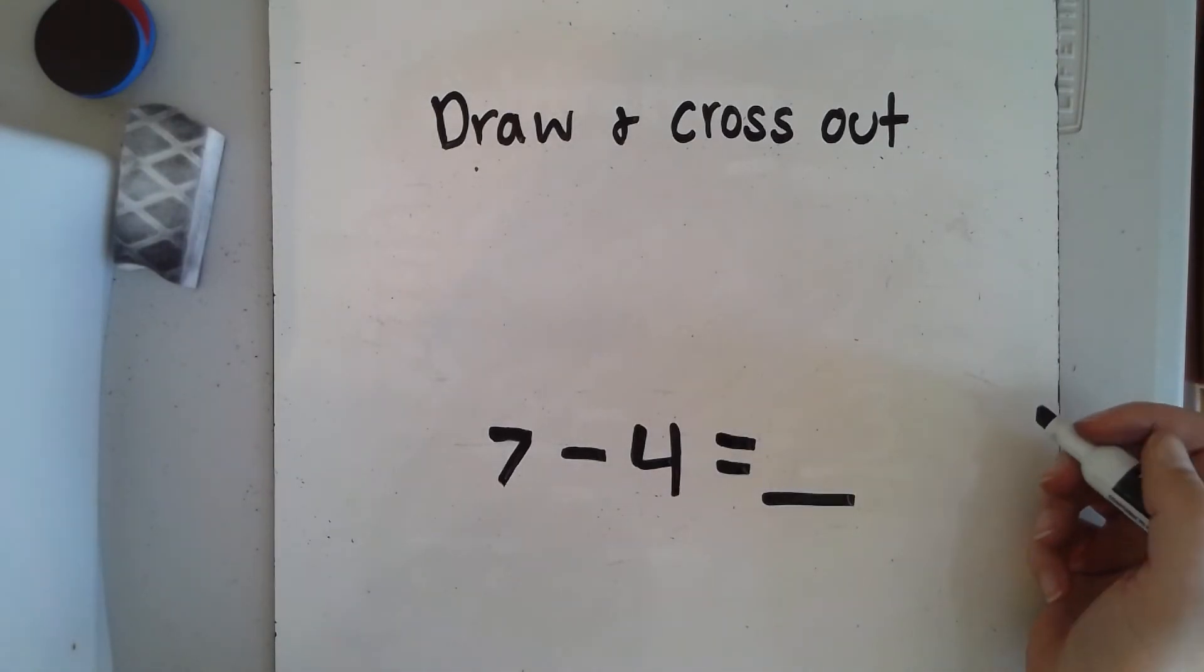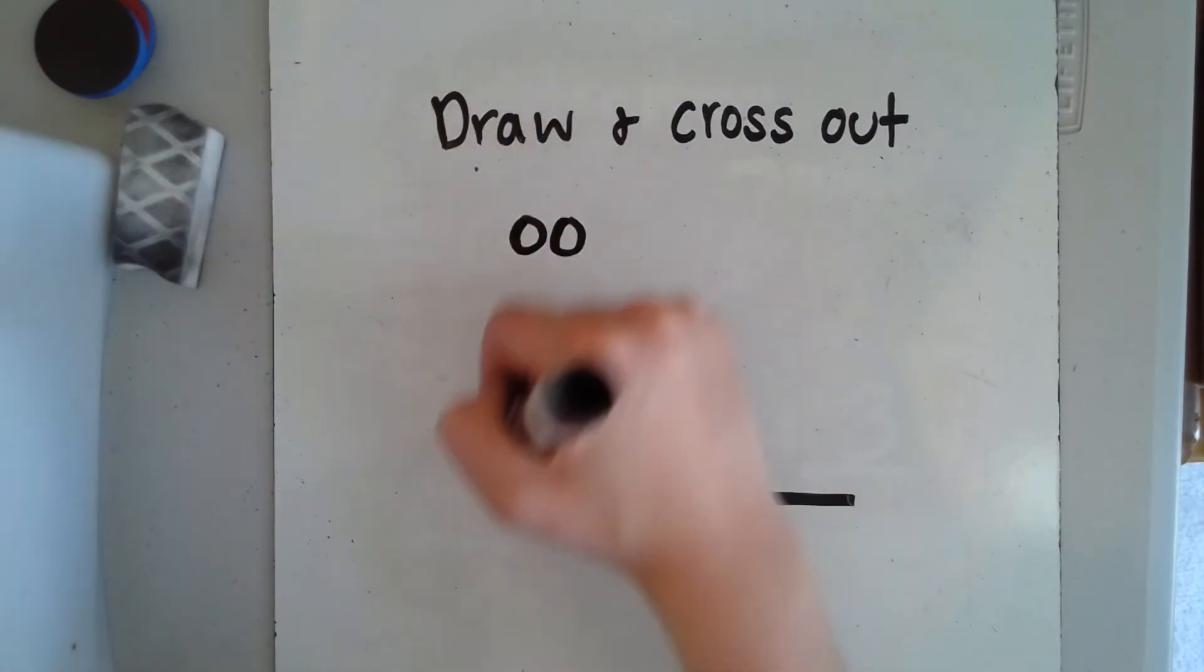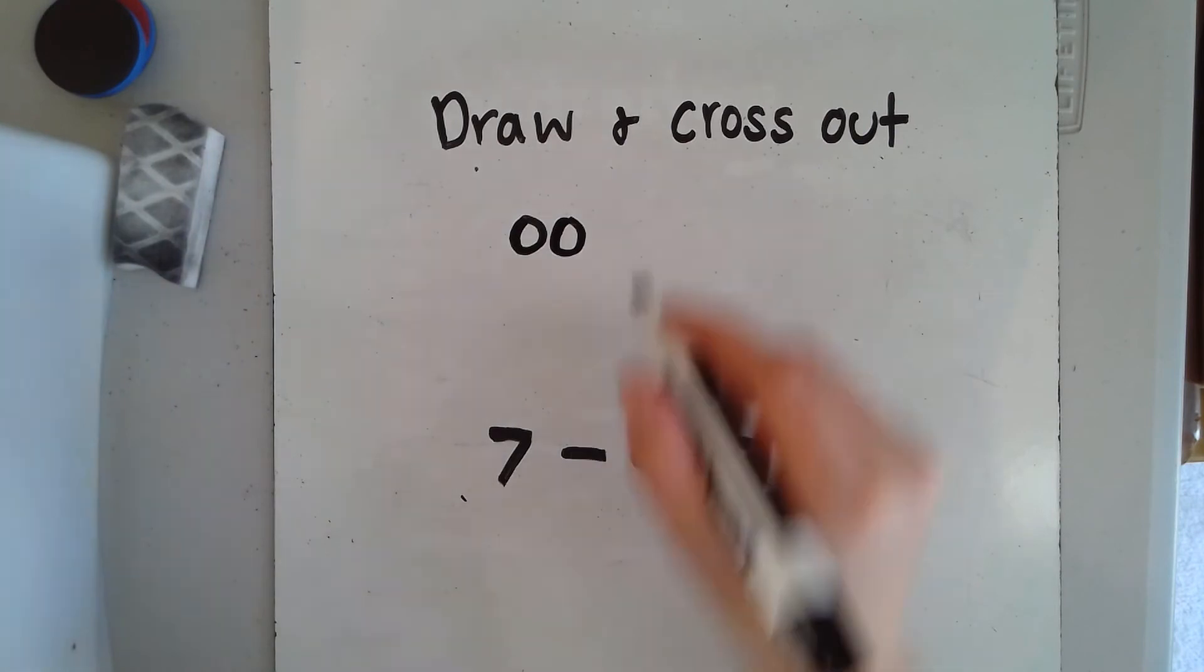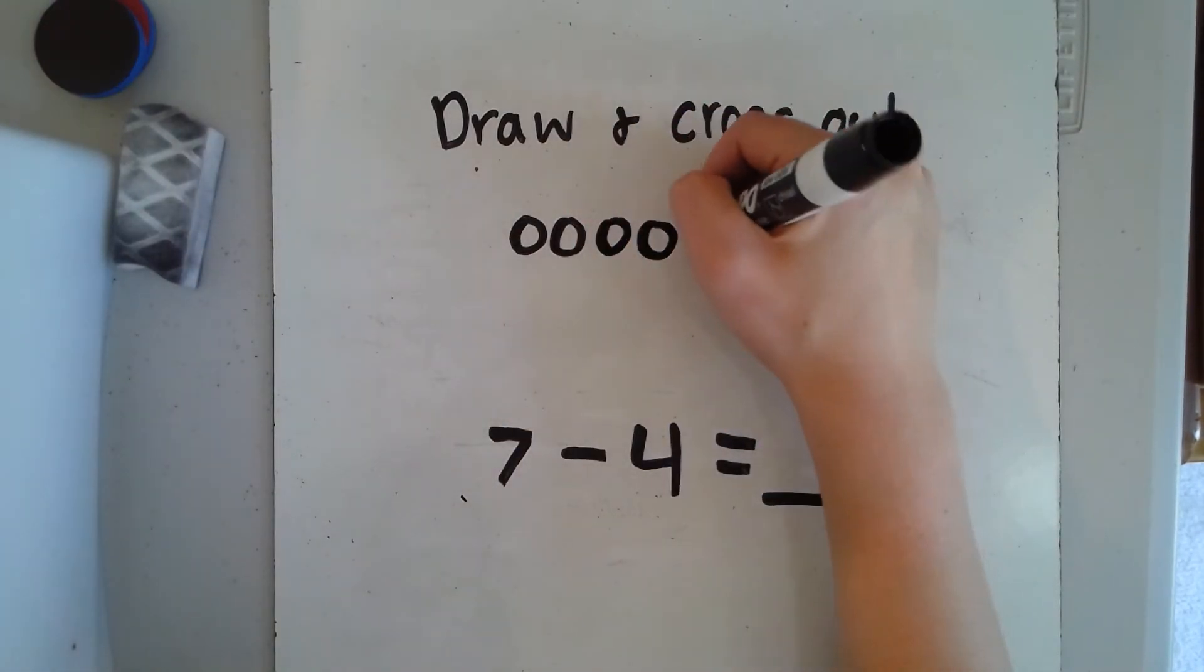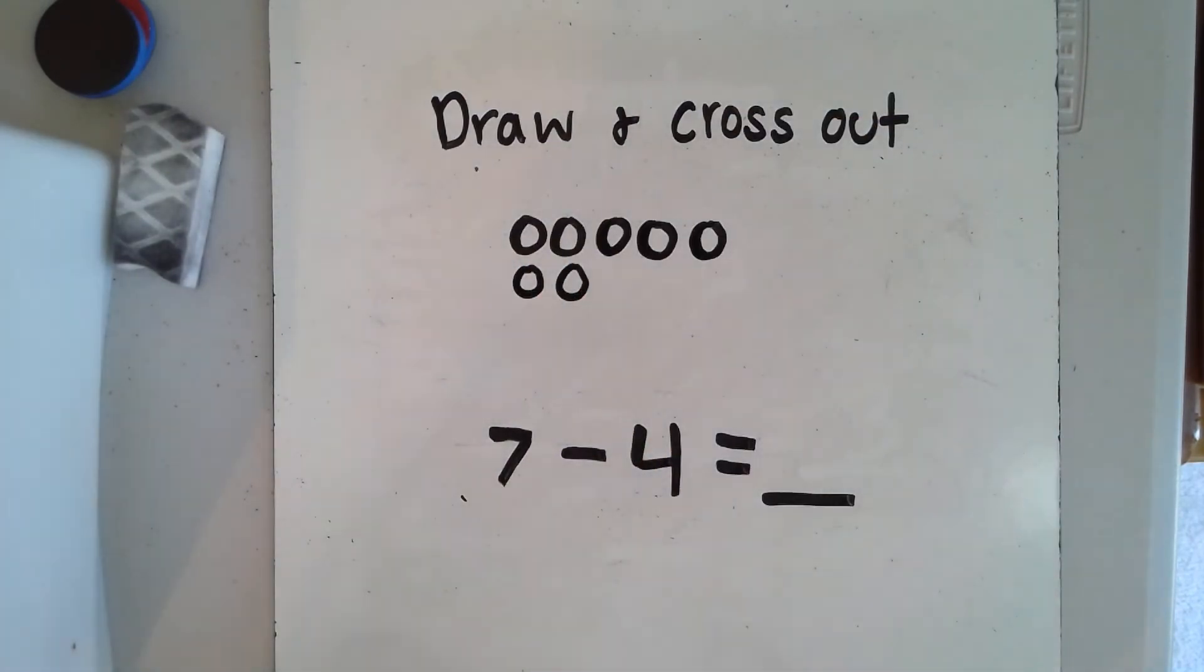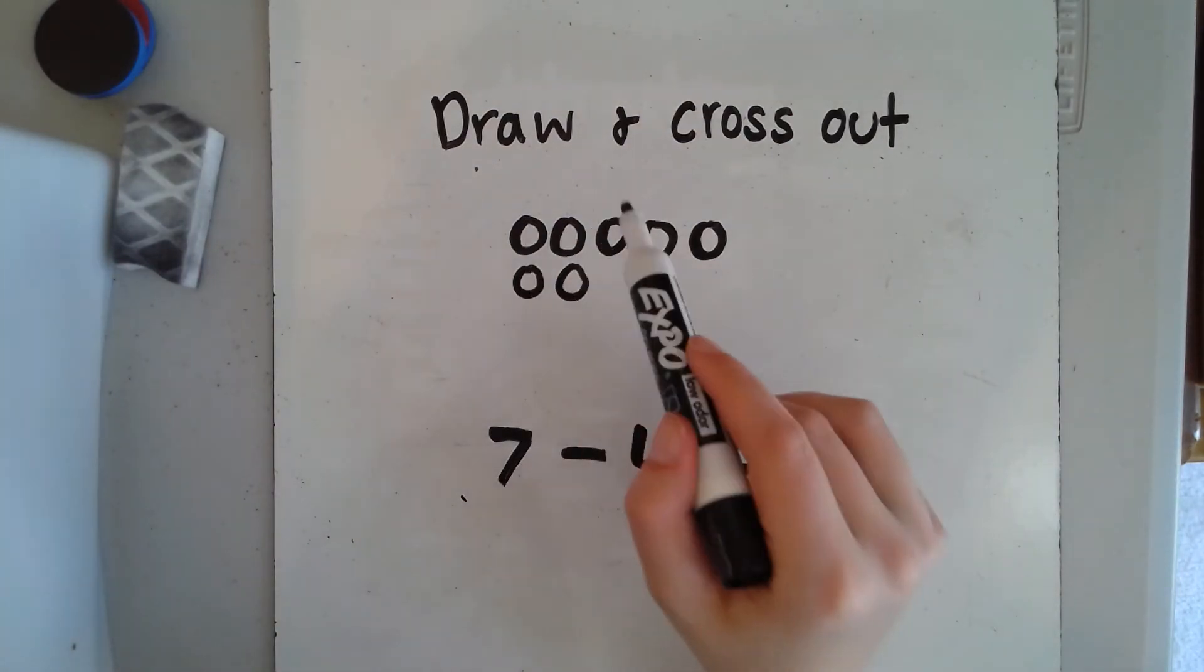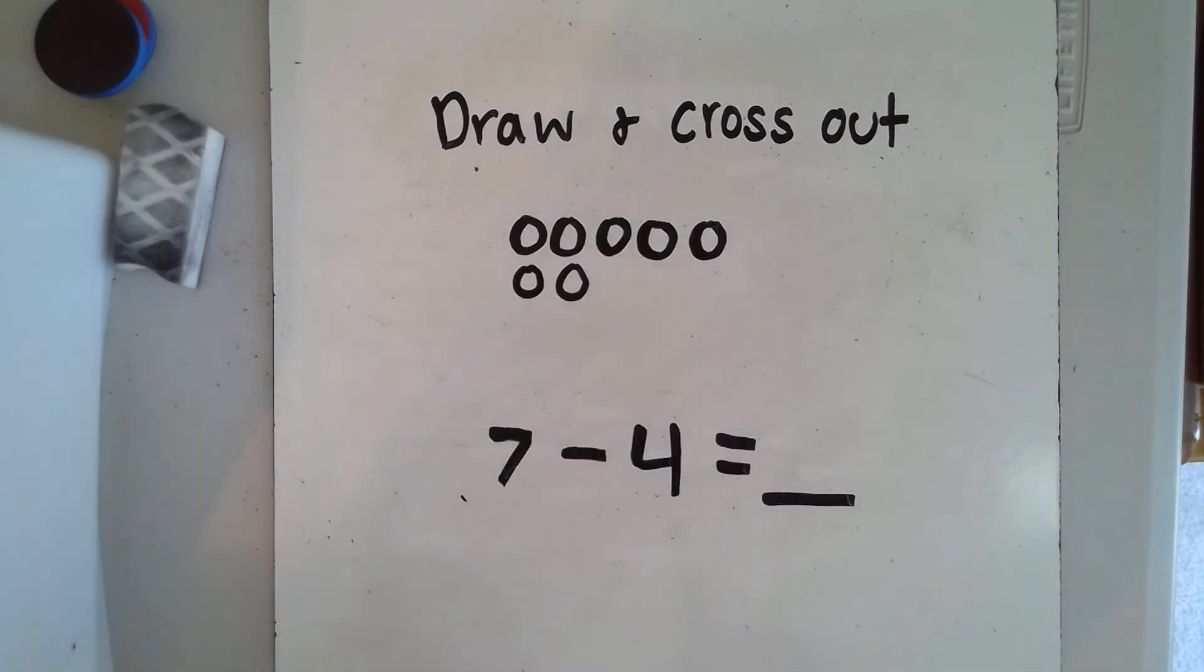When I draw my picture, I could draw something like hearts or boxes or stars, but I choose to draw circles because it's fastest. One, two—now I'm drawing the first number that I start with, which is seven: three, four, five, six, seven. Let's double check to see if I have seven circles, ready? One, two, three, four, five, six, seven. Good, I have the number of circles that I start with.